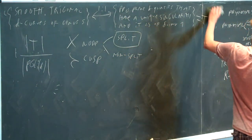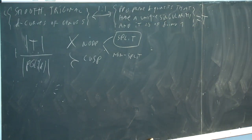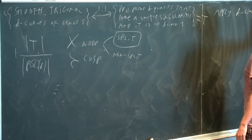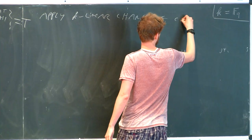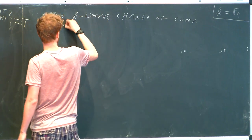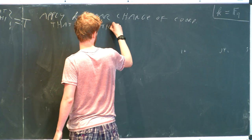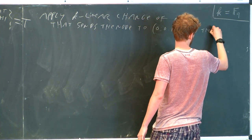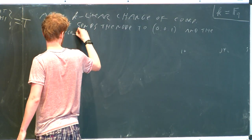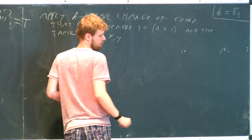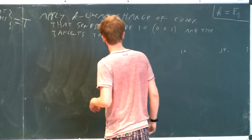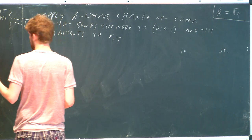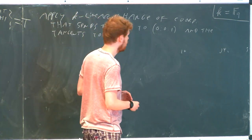If we have a split node, we apply a K-linear change of coordinates that sends the node to the fixed point (0:0:1) and the tangents to X and Y, where X, Y, Z are the coordinates of the projective plane. So if we can count all the curves that look like this, we can then multiply by the appropriate subgroup of the projective linear group corresponding to these linear transformations.